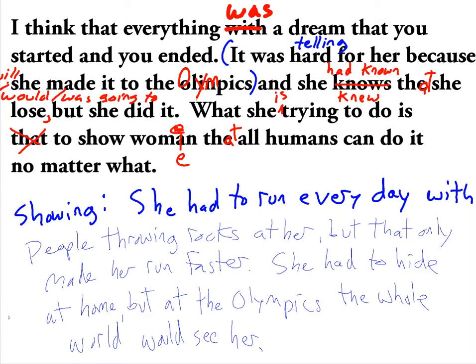When we wrote these paragraphs, we went back through them together to correct the grammar, and also to look at sentences that were telling us something, and think about how they could show it to us. So here we see in blue: 'It was hard for her because she made it to the Olympics.' Instead of telling us it was hard, we could show it — show the things she had to do that were hard, like she had to run every day, people throwing rocks at her, but that only made her run faster. That is showing, not telling.